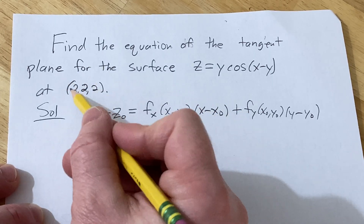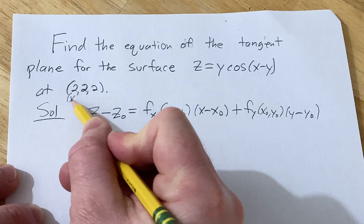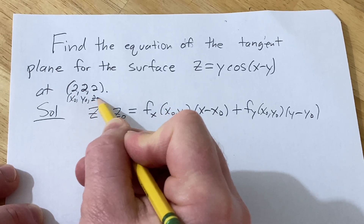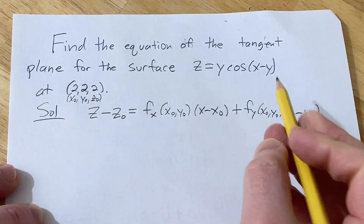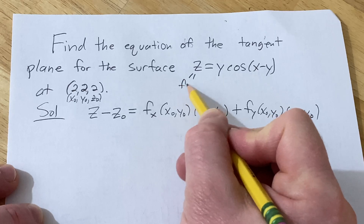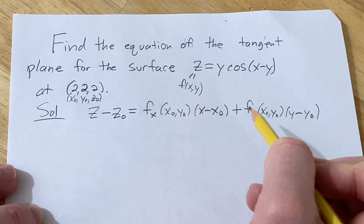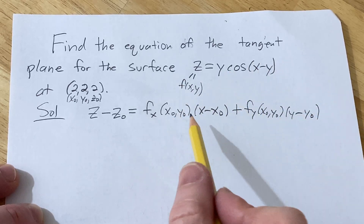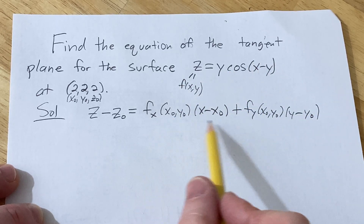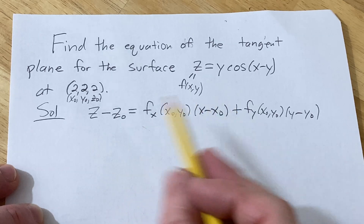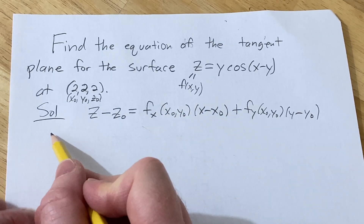In our particular case, x-naught, y-naught, and z-naught are all 2, and z is our f(x, y). So let's go ahead and start by finding the partial derivatives, and then we'll just plug everything into the formula.